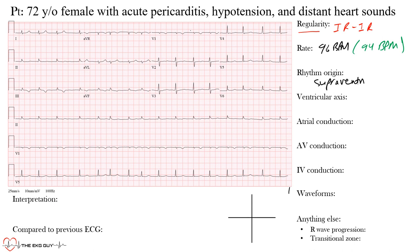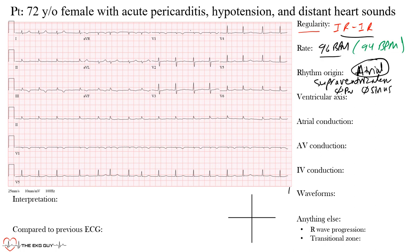The source is supraventricular — above the ventricle. This is not a sinus rhythm because we have an irregular rhythm and no P waves that we can clearly make out. It may be coming from the AV node or somewhere in the atria. An irregularly irregular rhythm at 96 bpm from a supraventricular atrial source — this should give you a clue as to what this underlying rhythm is.